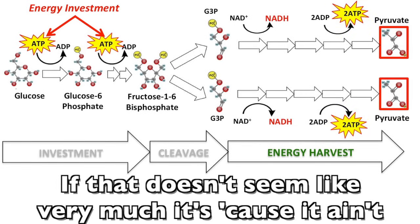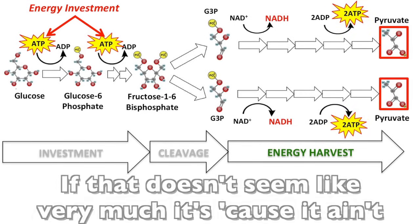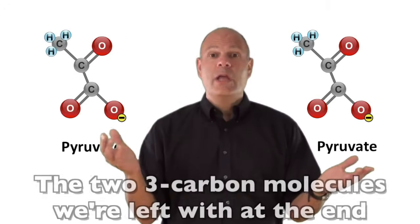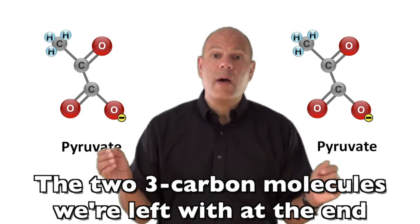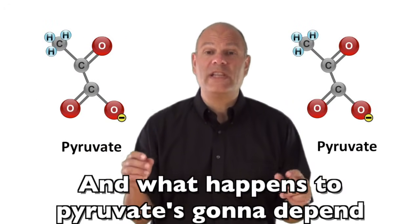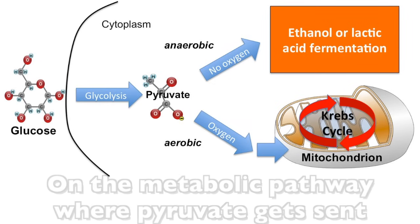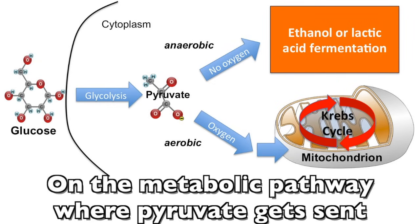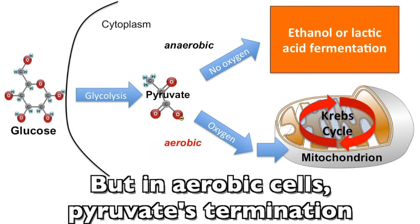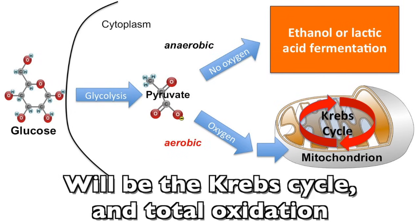If that doesn't seem like very much, consider: there's tons of energy left in pyruvate — the two three-carbon molecules we're left with at the end. And what happens to pyruvate's gonna depend on the metabolic pathway where pyruvate gets sent. If it's anaerobic, it'll be fermented. But in aerobic cells, pyruvate's destination will be the Krebs cycle and total oxidation.